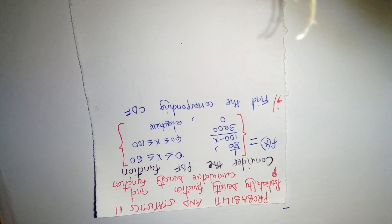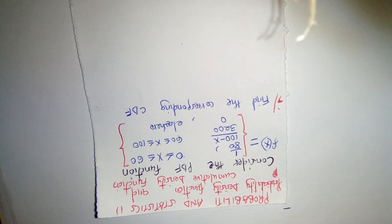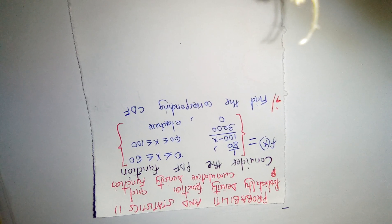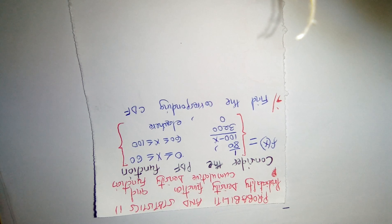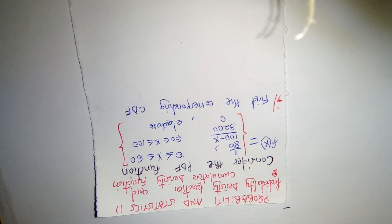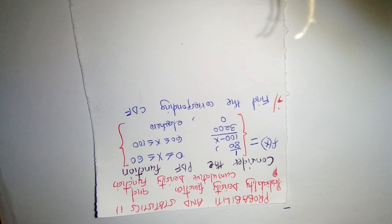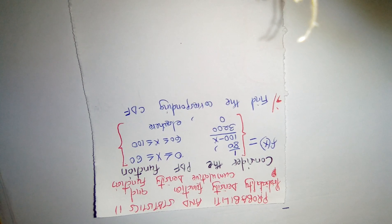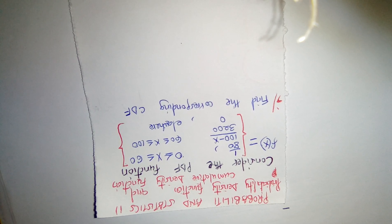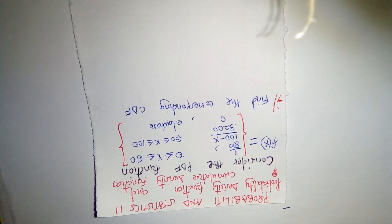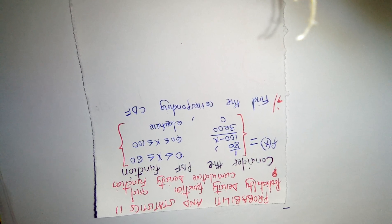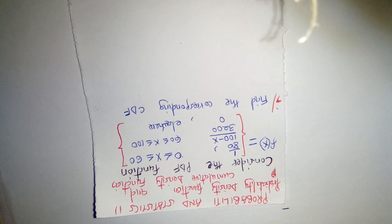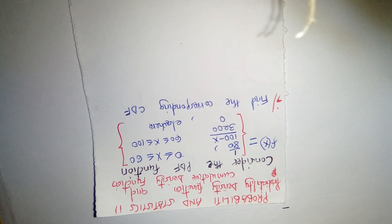The PDF function f(x) is defined as: 1/80 for 0 ≤ x ≤ 60; then (100 − x)/3200 for 60 ≤ x ≤ 100; and zero elsewhere.